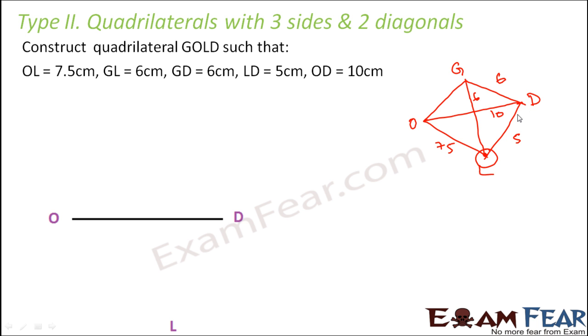So if you look at it, in triangle ODL we know the values of all the 3 sides. So one we have already drawn that is OD, so we know OL we also know DL. So let us first try to draw this triangle.